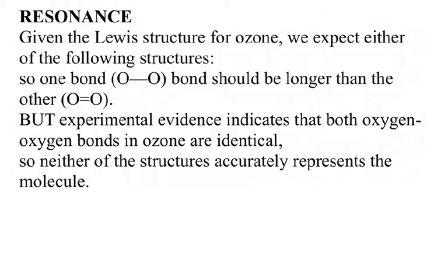A single bond is actually measured to be longer in terms of bond length than a double bond. A double bond is a little bit shorter in length, and a triple bond would actually be even shorter. Experimental evidence indicates that both oxygen-oxygen bonds in ozone are identical. If it was true that one side has a single and the other side has a double, we would expect one side of the ozone to be a little longer than the other, but that is not the case.